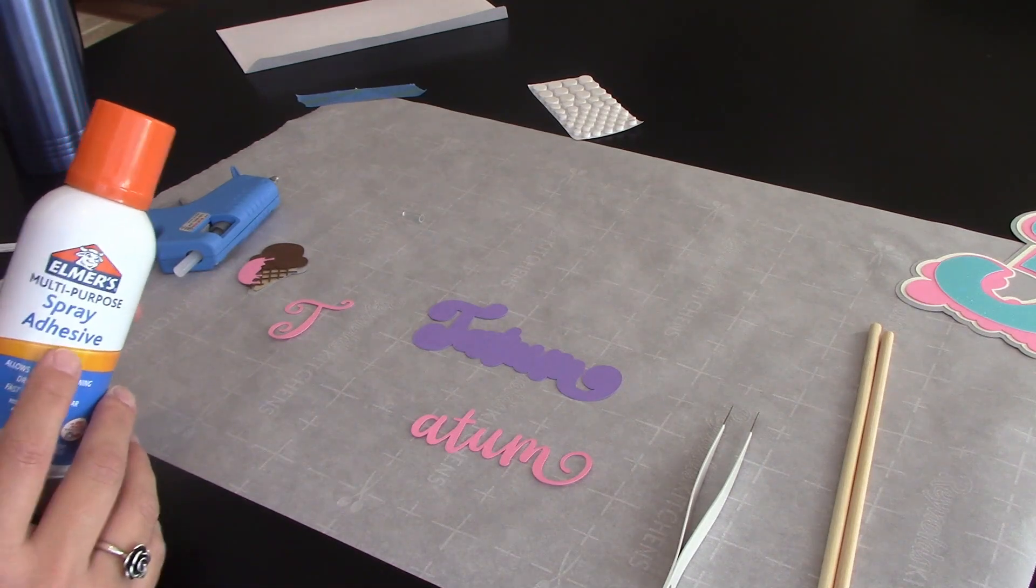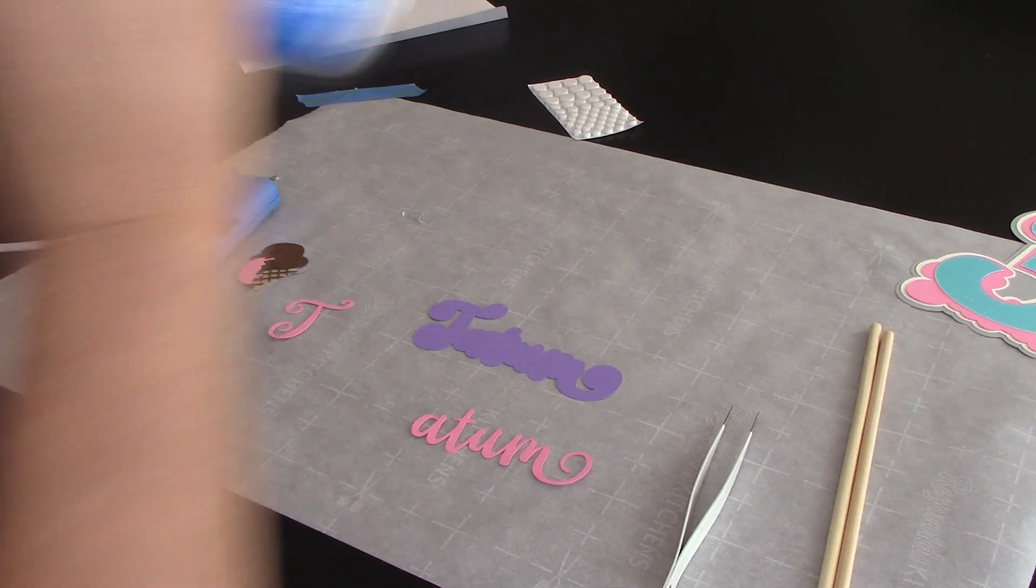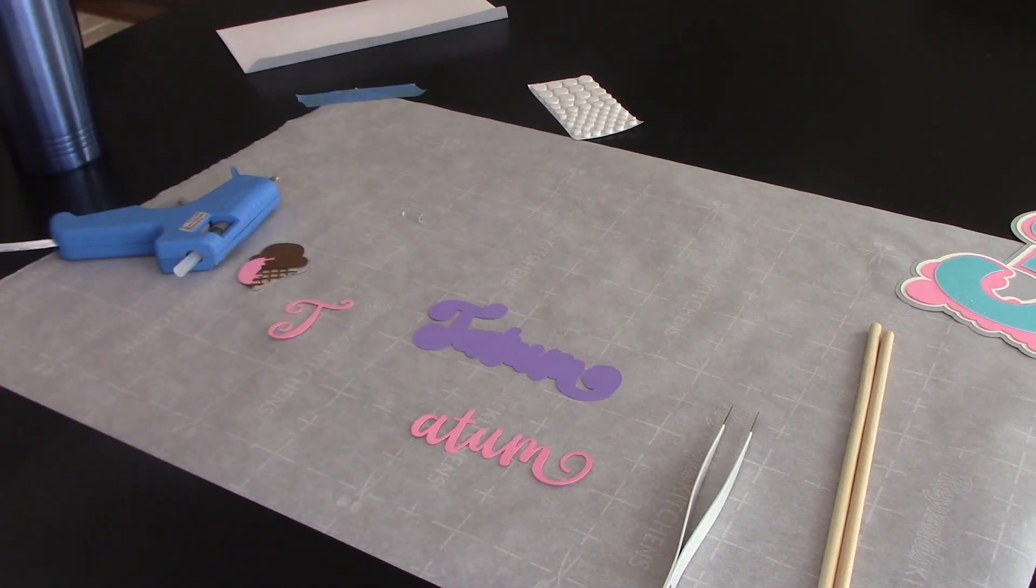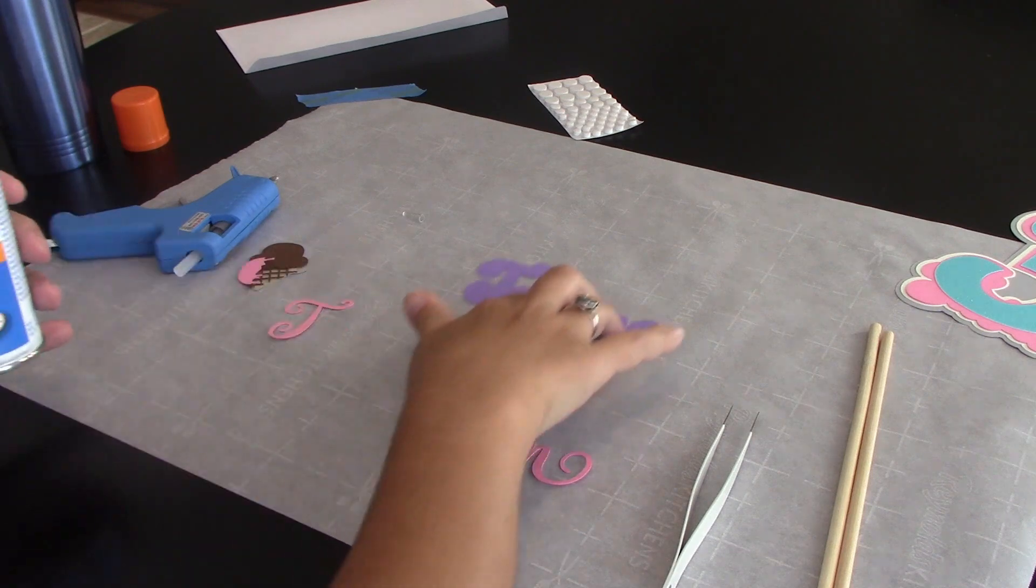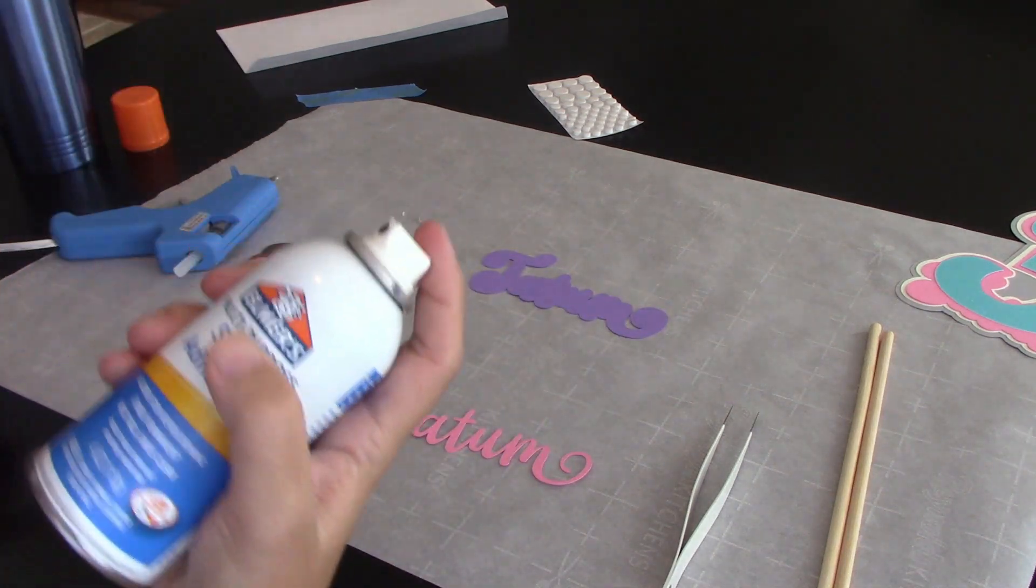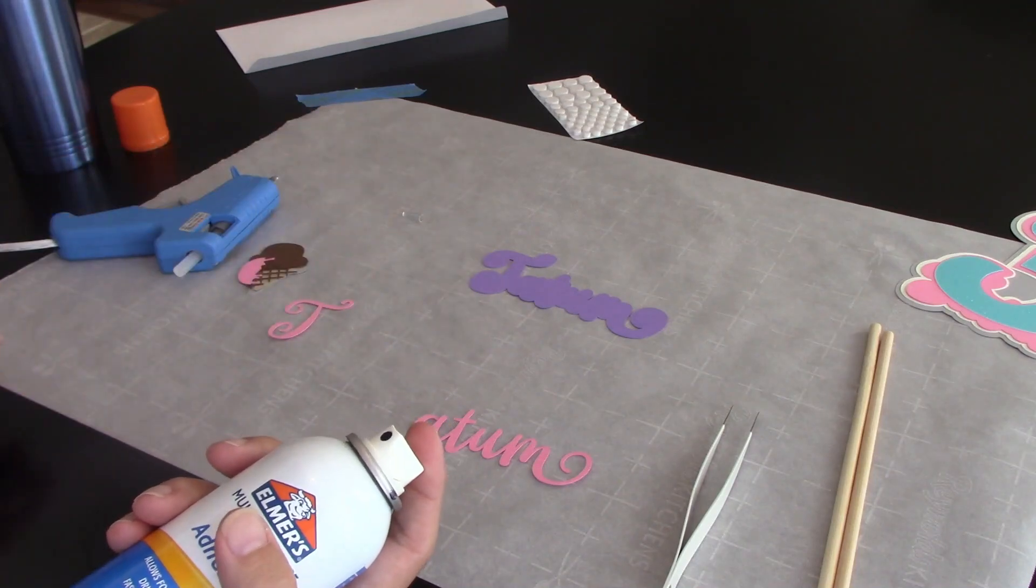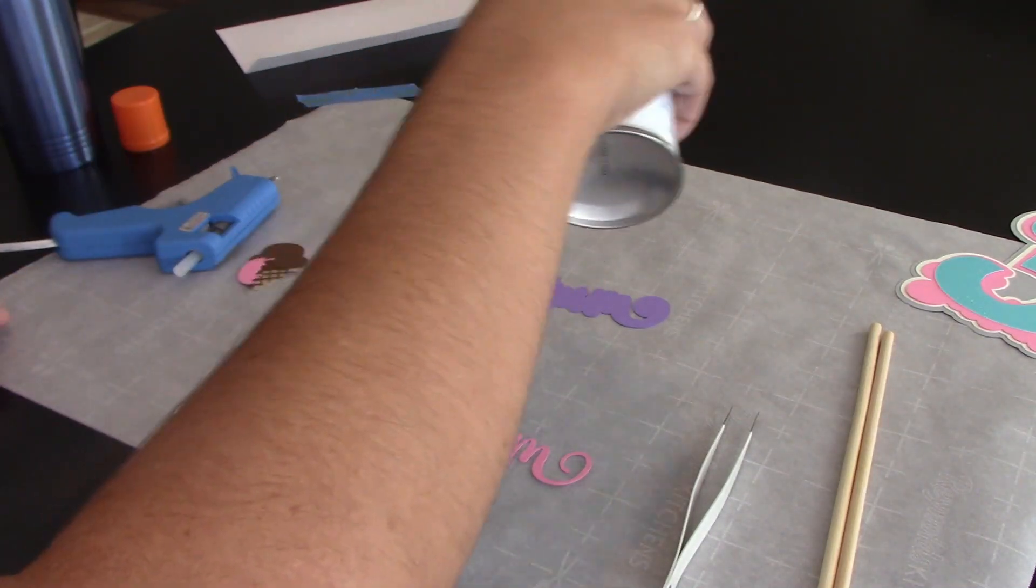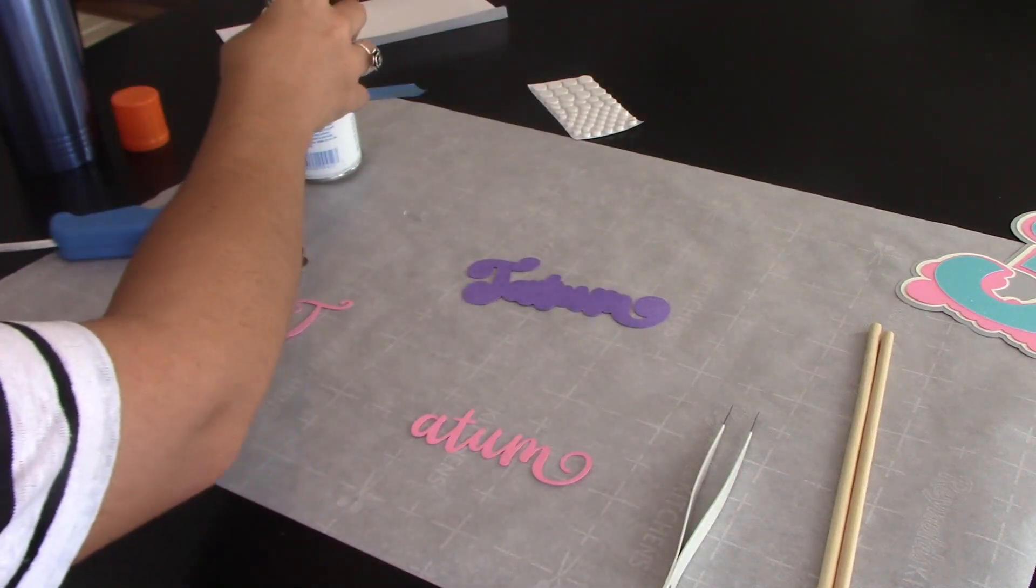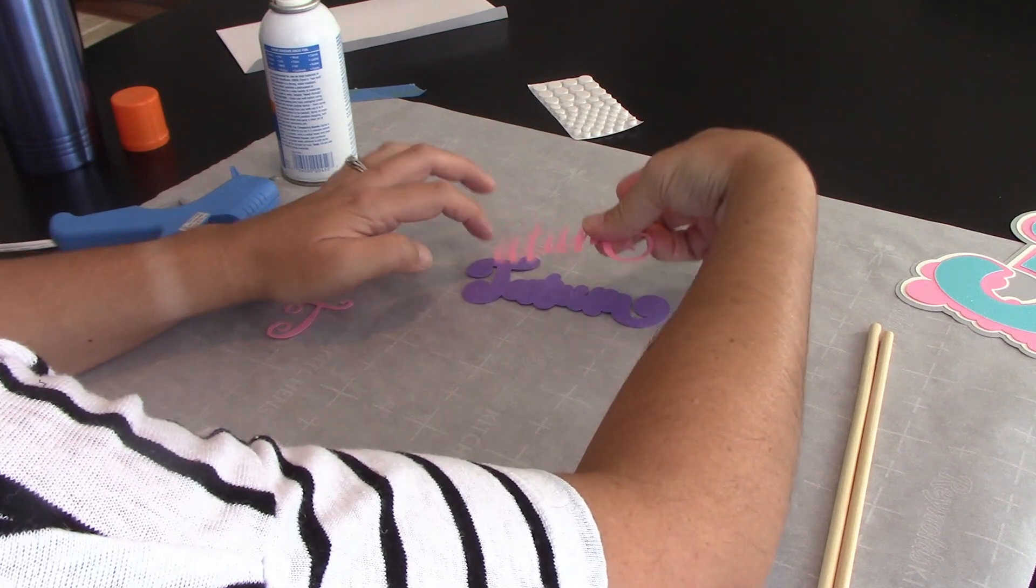So first of all, shake up your glue. But you want to give it a good shake up. And then just lightly spray your entire base that you're going to glue your other thing to. And don't get super close to it. Just come up here and spray it. And then kind of quickly you need to get your other thing placed.